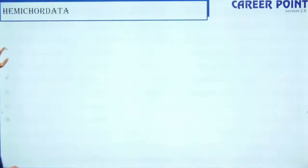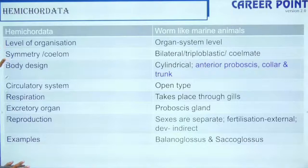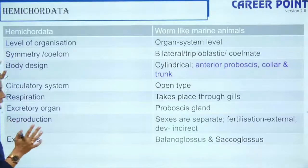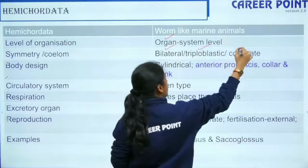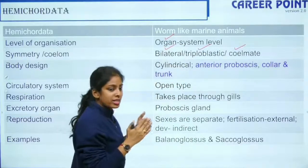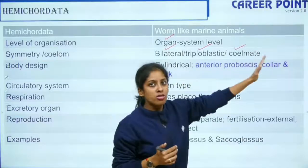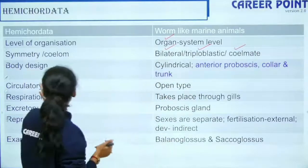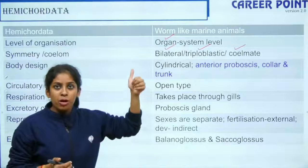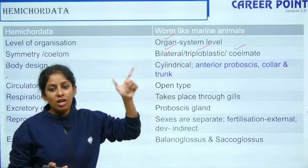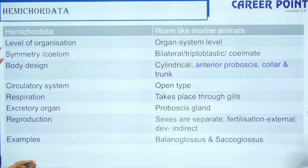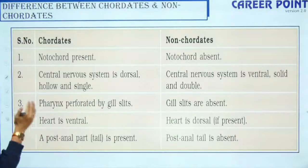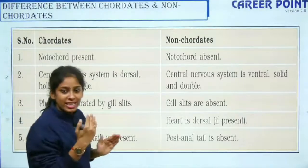Hemichordata are worm-like marine animals. They have organ system level, bilateral symmetry, triploblastic, and are coelomate. They are also segmented with an anterior proboscis, collar, and trunk. Their circulatory system is open — so both Arthropoda and Hemichordata have an open-type circulatory system. Excretion is through the proboscis gland.